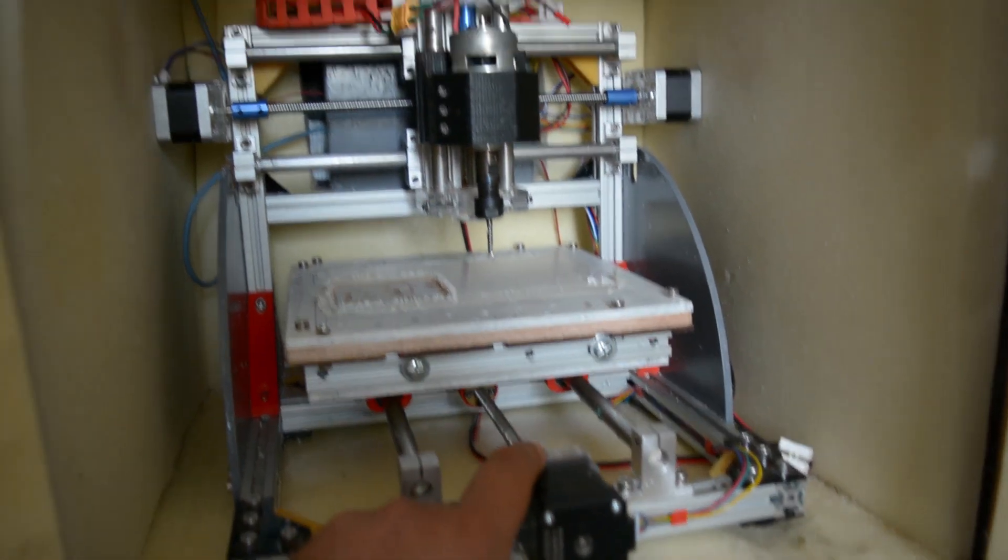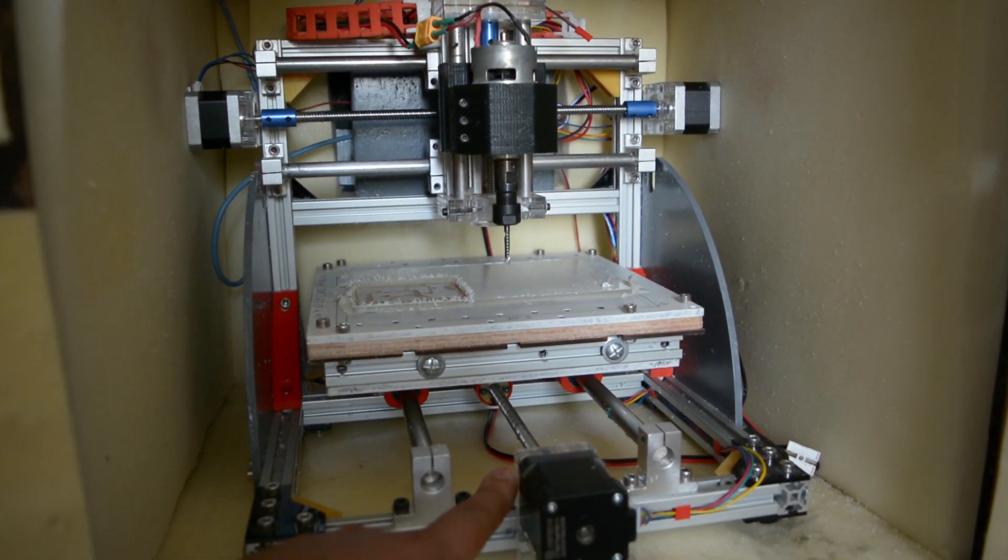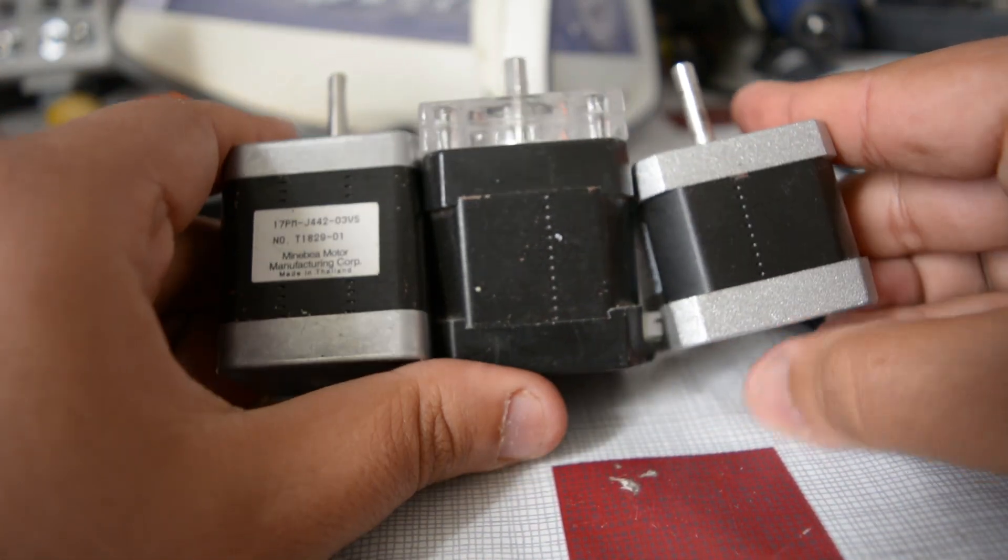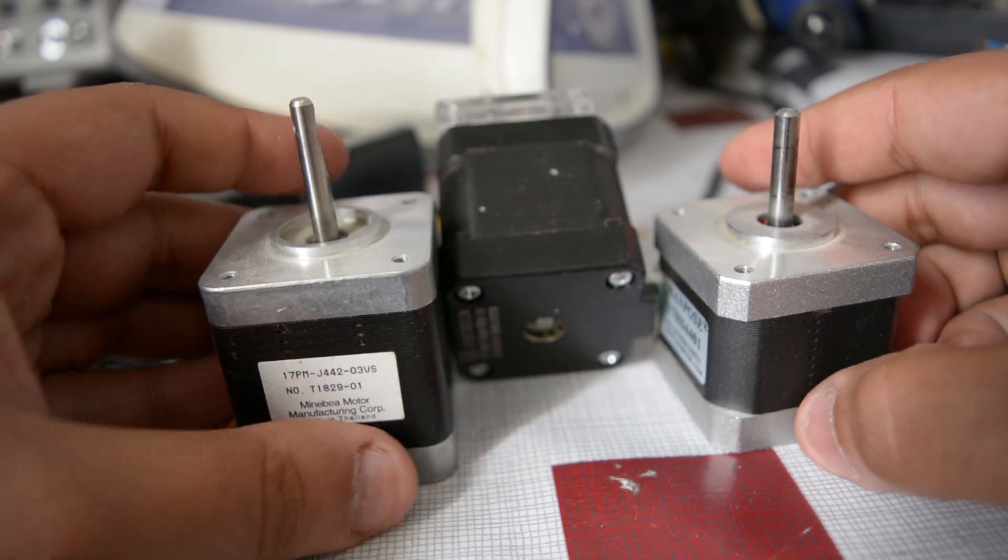My CNC contains 2 types of motors: the small ones that you can find in normal 3D printers like the Prusa printers, and a slightly larger motor that you can find on bigger machines like the CR-10S from Creality.